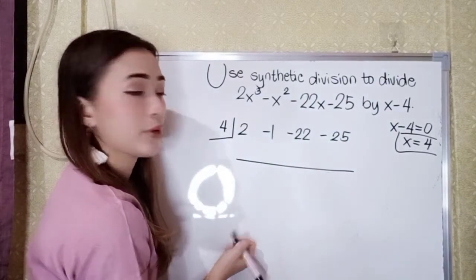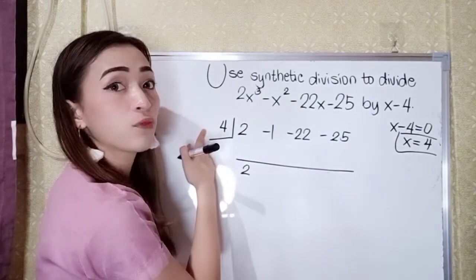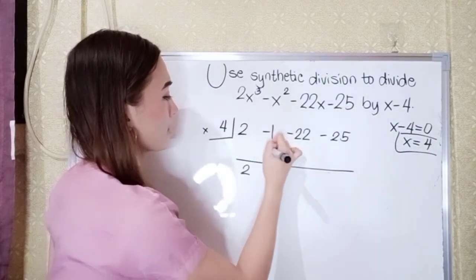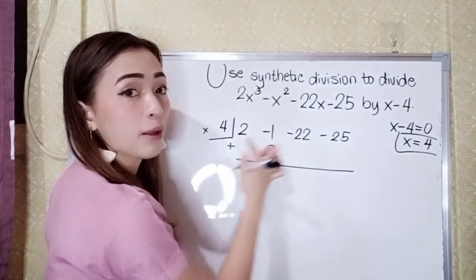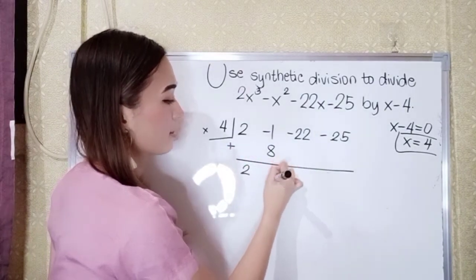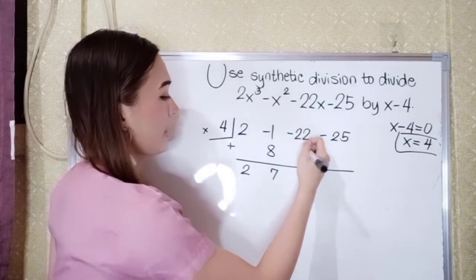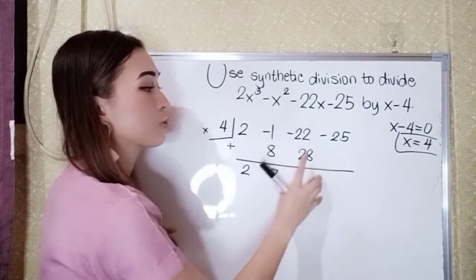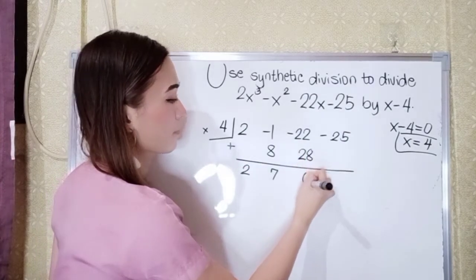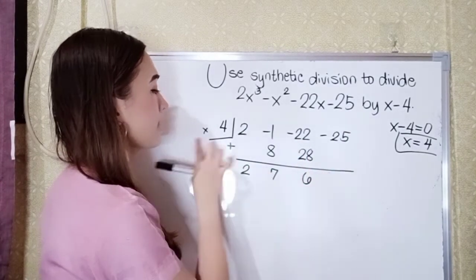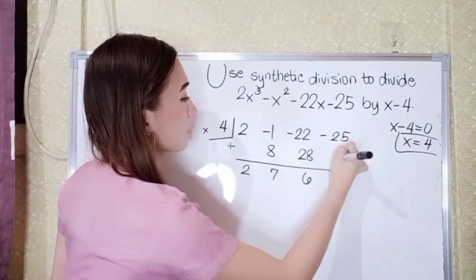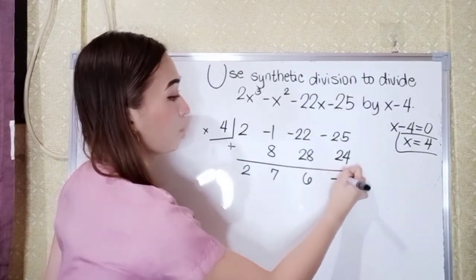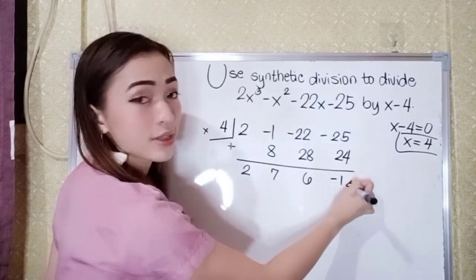Let's divide. Bring down 2. 2 times 4 is 8. Negative 1 plus 8 is 7. Then 7 times 4 is 28. Negative 22 plus 28 is positive 6. Then 6 times 4 is 24. Negative 25 plus 24 is negative 1. This is our remainder.